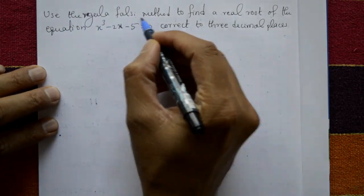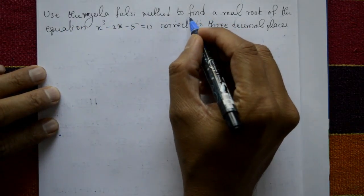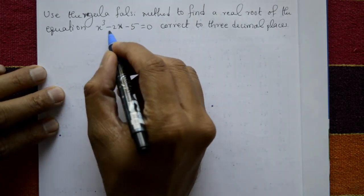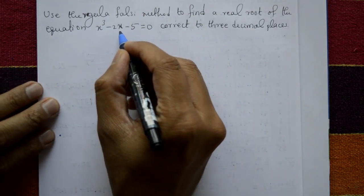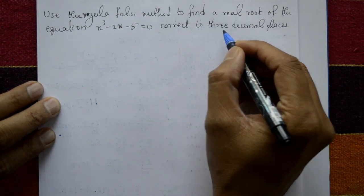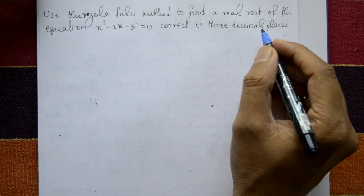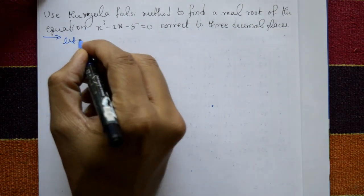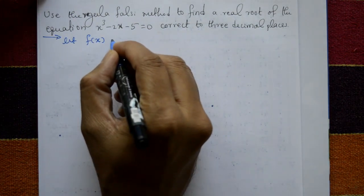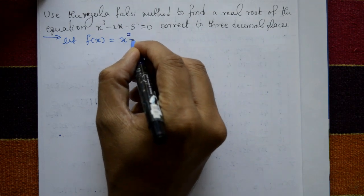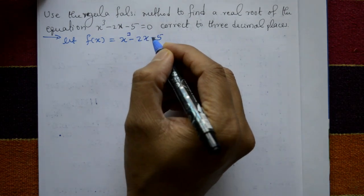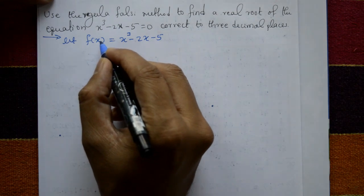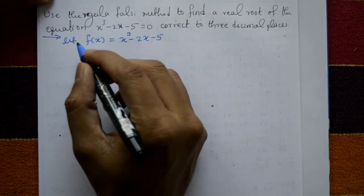Use the regular falsi method to find a real root of the equation x cube minus 2x minus 5 equal to 0, correct to three decimal places. Let f of x equal to x cube minus 2x minus 5. Now put x equal to 0, 1, 2, 3.